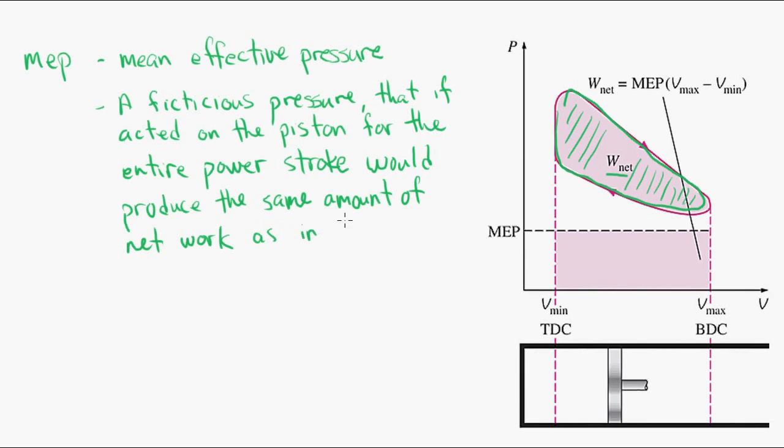So on that right, if we look back at the PV diagram, which goes between the two volumes, the area under the rectangle defined by the MEP has the same area that's in the actual curve where the network is. So these two areas are equal.